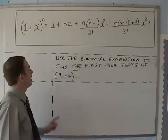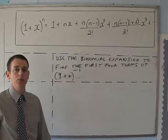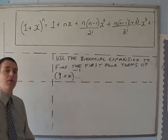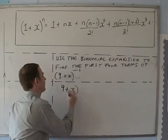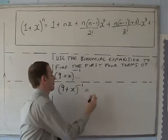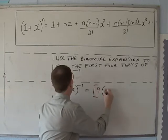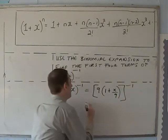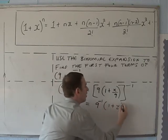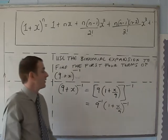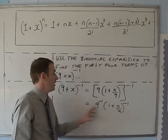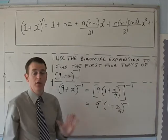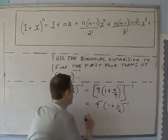Now, what about if we had something like this? Find the first four terms of (9 + x)^(−1). Again, we can only use the binomial formula if we've got a 1 at the front, so we're going to have to bring that 9 outside the brackets. So (9 + x)^(−1) is exactly the same as [9 × (1 + x/9)]^(−1), which equals 9^(−1) × (1 + x/9)^(−1). Something very easy to forget here is writing this as equal to 9 — that is not going to be correct. 9^(−1) is, of course, one ninth.